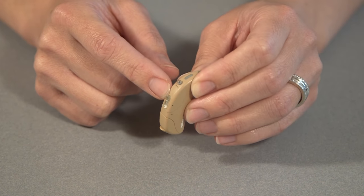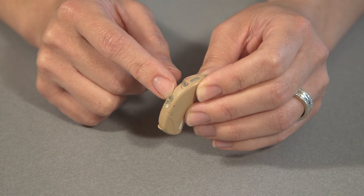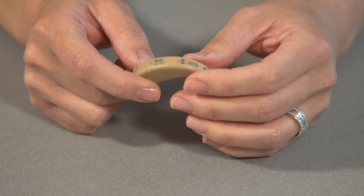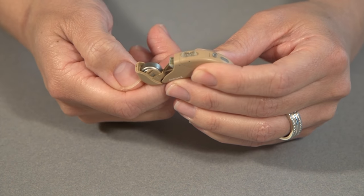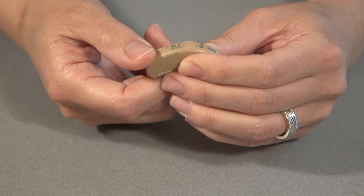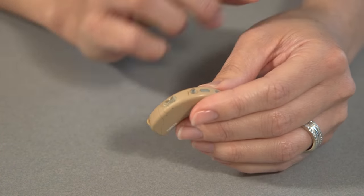If you have adjusted the volume and you're not exactly sure where you're at or you're not sure which program you're on, you can always just open the battery door and close it again. And that will reset it to the way that you and your audiologist have it programmed.